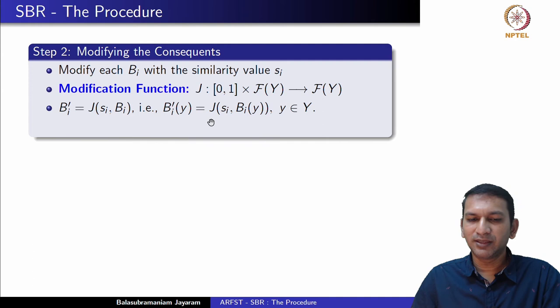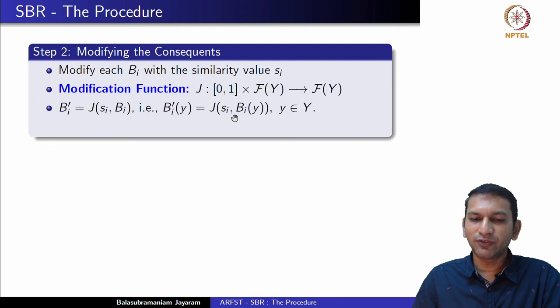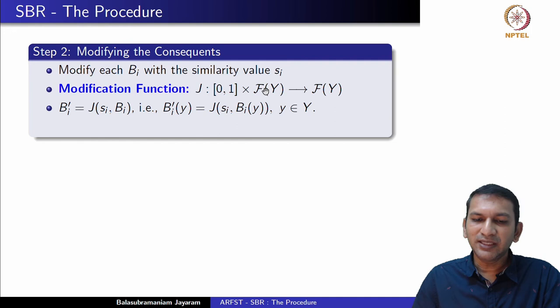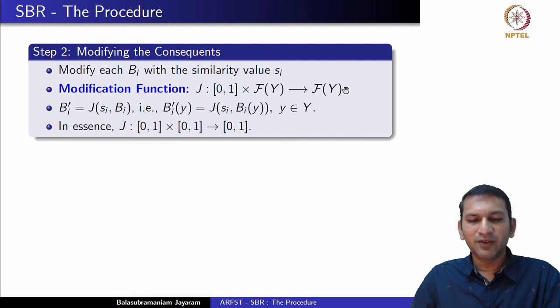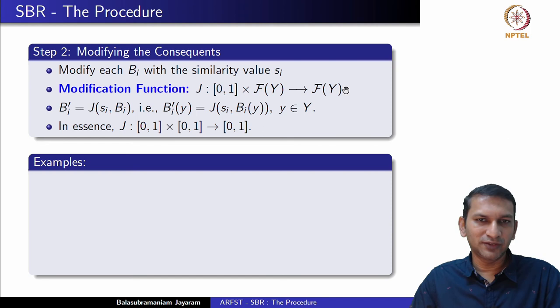Let us look at examples of modification functions proposed in the literature. Morsi and Fahmy proposed B'(x) = S · B(x) — essentially the product operation, which is a fuzzy logic connector. This scales the fuzzy set B by the similarity value S. The support of B' is exactly the same as the support of B, but B' is contained in B with respect to the pointwise order.